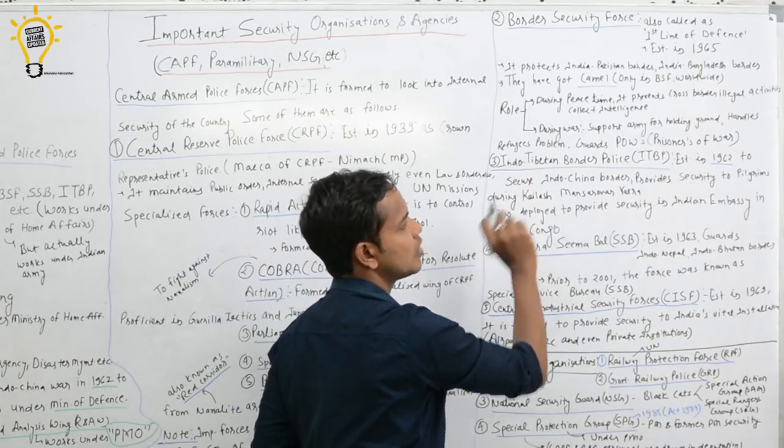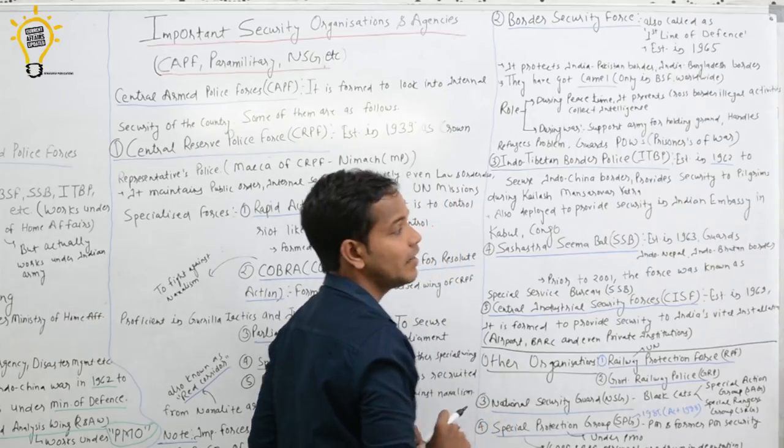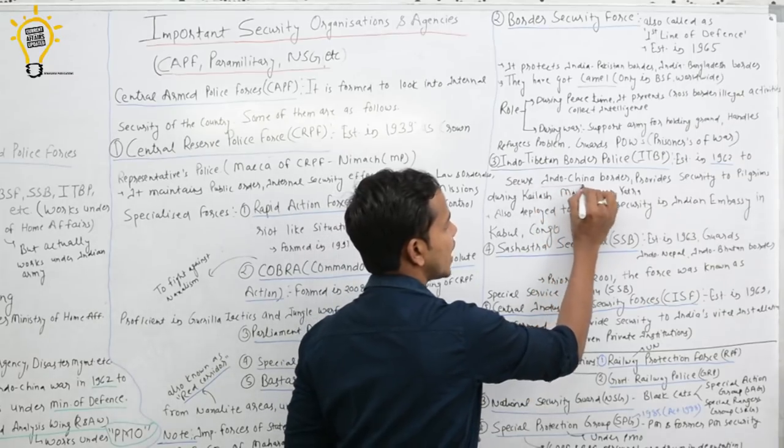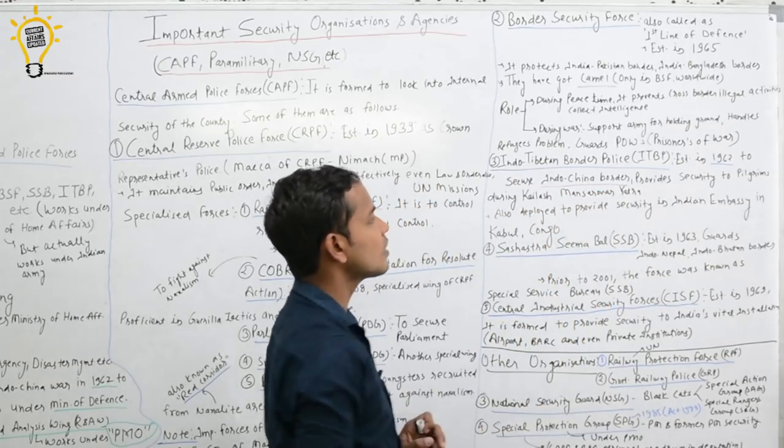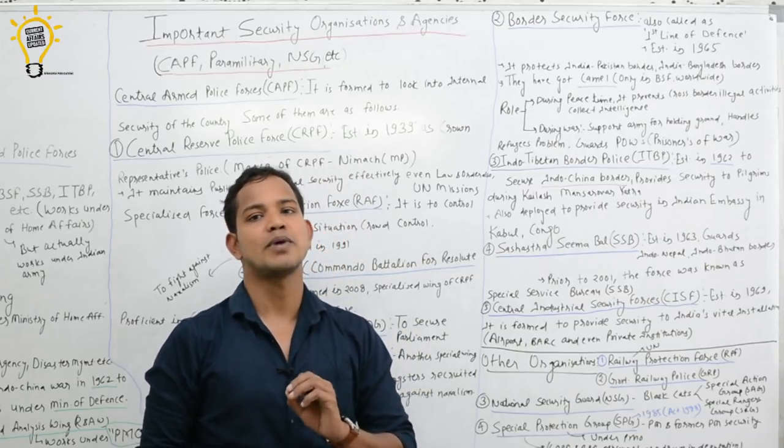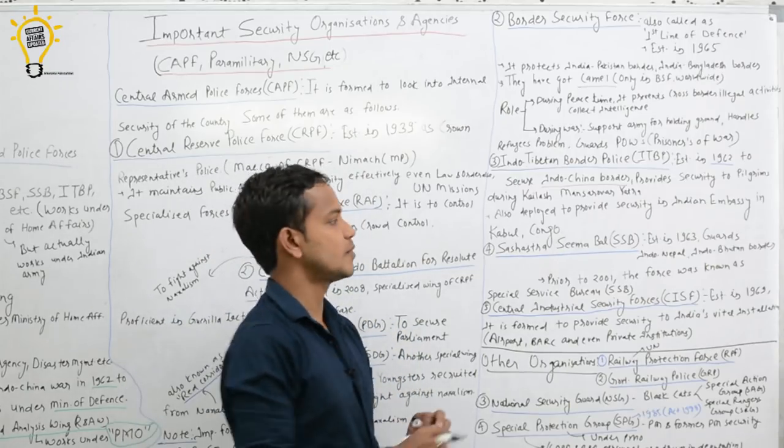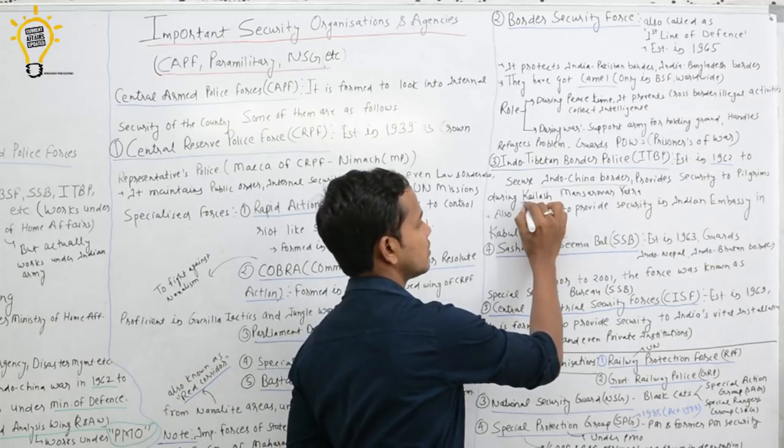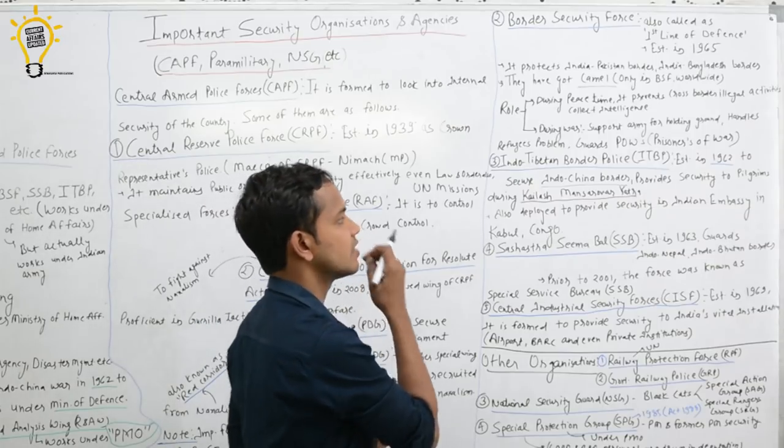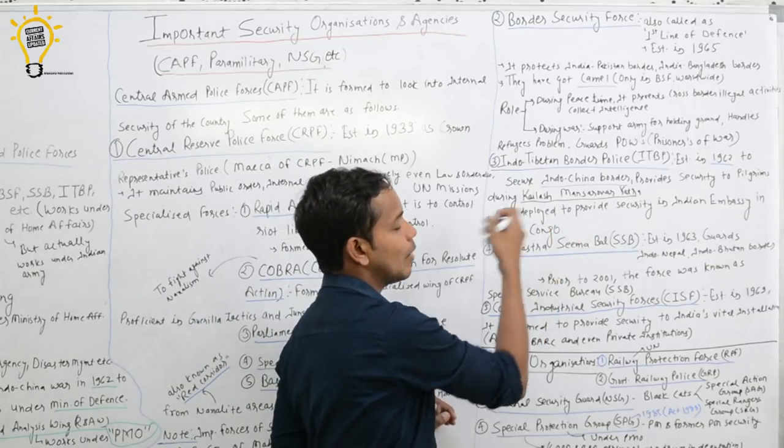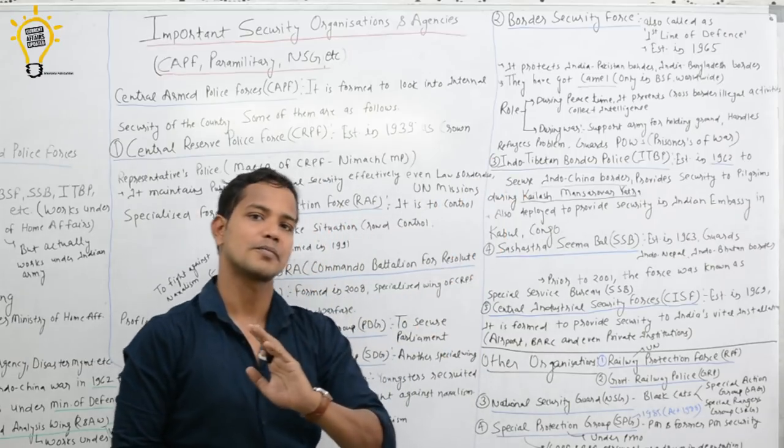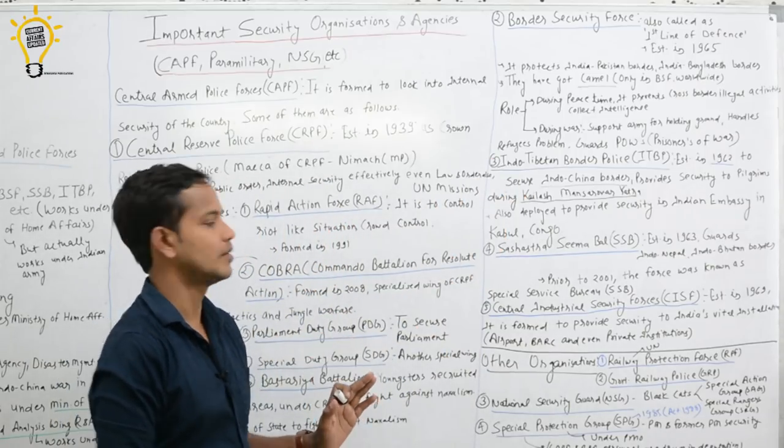Third is Indo-Tibetan Border Police, ITBP. Created after the 1962 Indo-China war, its main work is to watch the Indo-China border. Apart from this, it provides security to pilgrims who go on the Kailash Mansarovar yatra. As you may know, for the Kailash Mansarovar yatra, you have to cross through Tibet, we have to cross the border, and they help us there. Apart from this, ITBP is deployed at Indian embassies in Kabul and Congo.